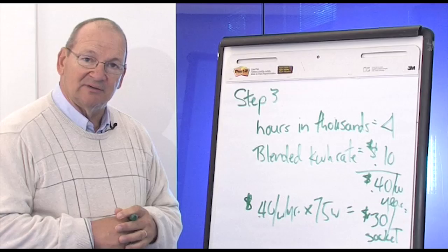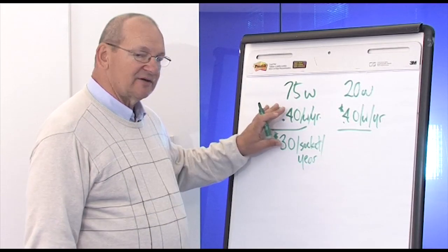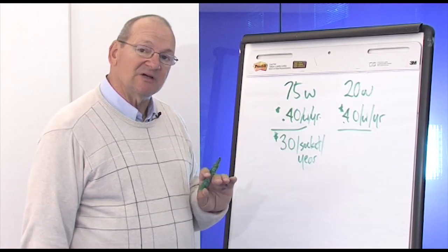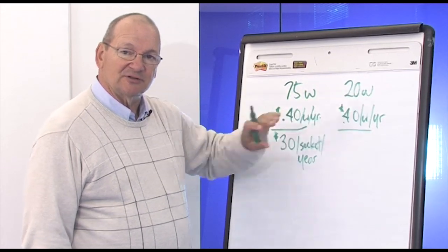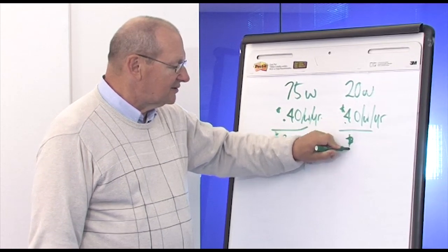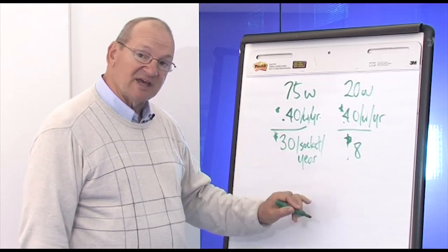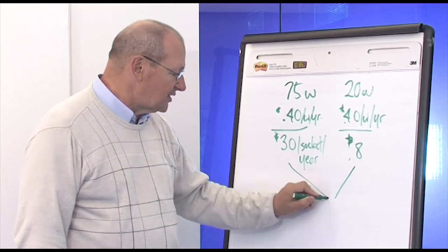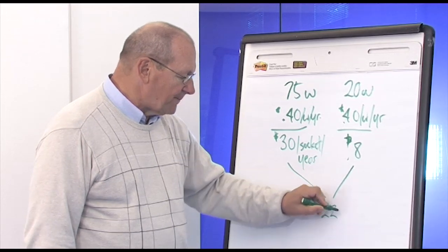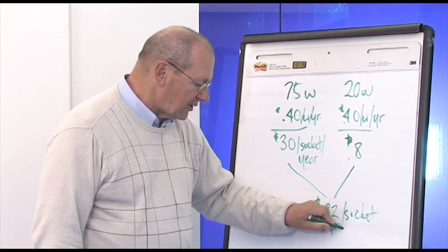Let's take a moment now and do a couple of other examples. Now let's put this tool to work. We've already figured out that it costs $30 to operate that 75 watt socket. Supposing we replace this product with a 20 watt solution. 20 watts times 40 cents per watt is, that's right, $8. How many dollars are we going to save per socket with this solution? 30 take away 8 is $22 per socket per year.